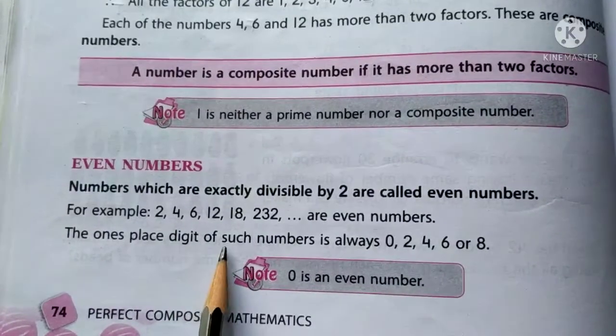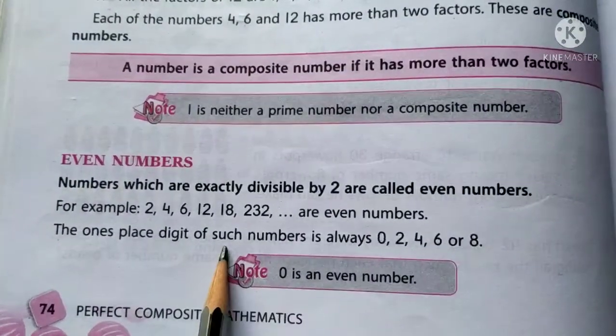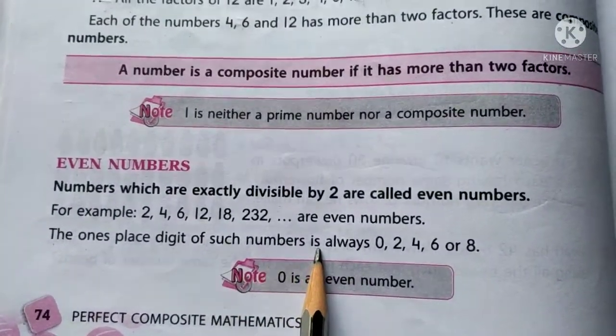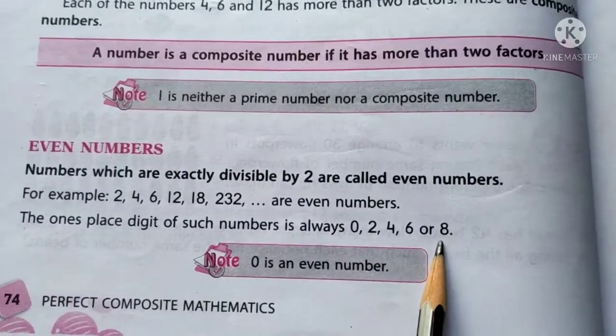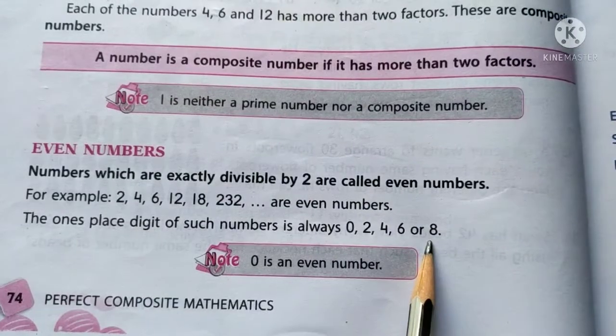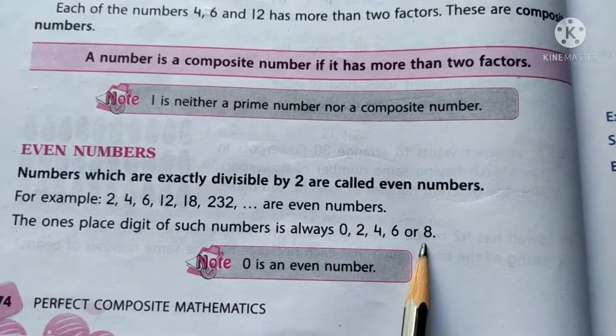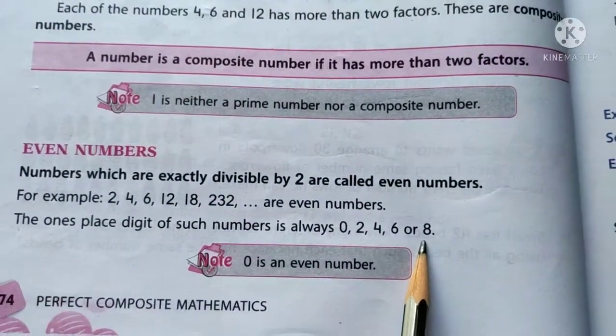The ones place digit of such numbers, that is the ones place digit of even numbers, is always 0, 2, 4, 6 or 8. So, in order to identify the even numbers you can check the ones place of the digit.